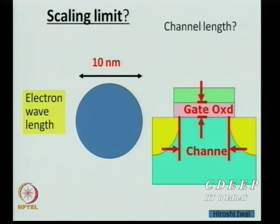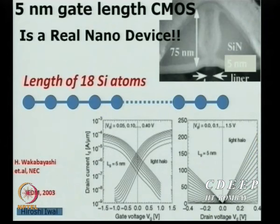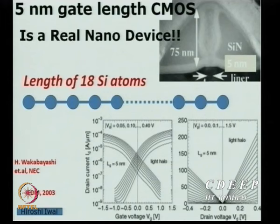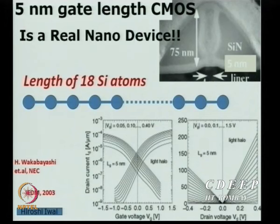A 5 nm gate length CMOS is a real nano device with only 18 silicon atoms across. Such devices were made as early as 2003, but out of millions made, only 2–3 work. The technology is known, but reliability — making them work consistently — is still the major challenge.